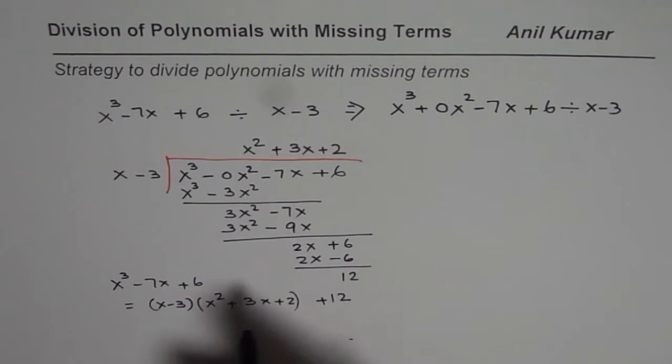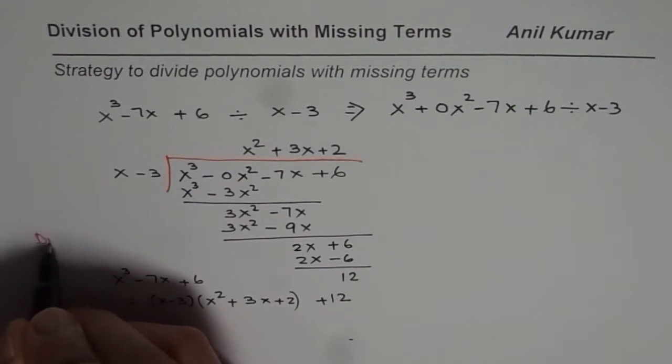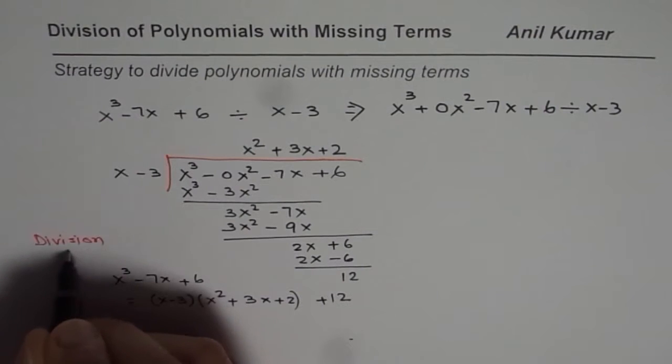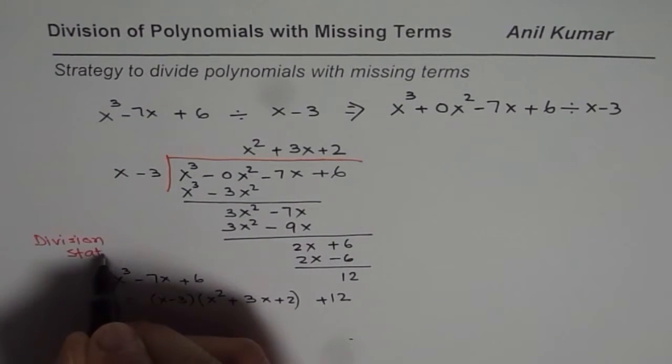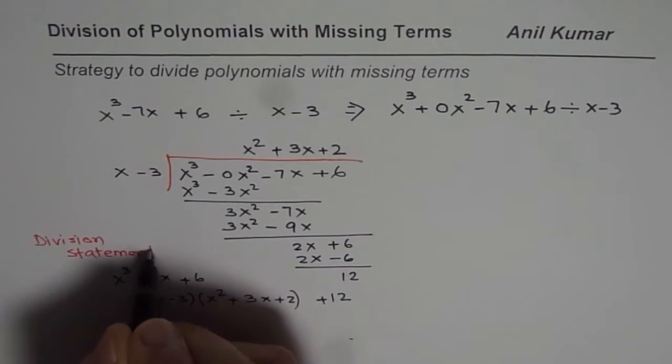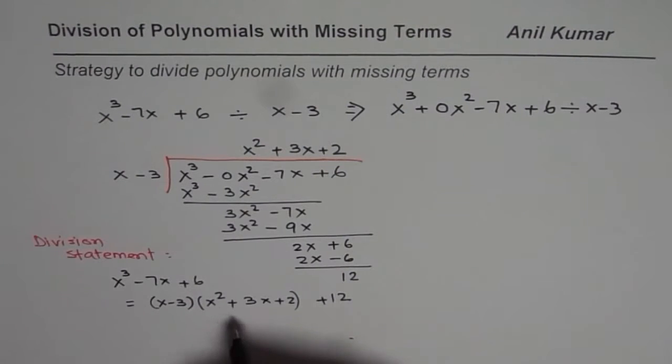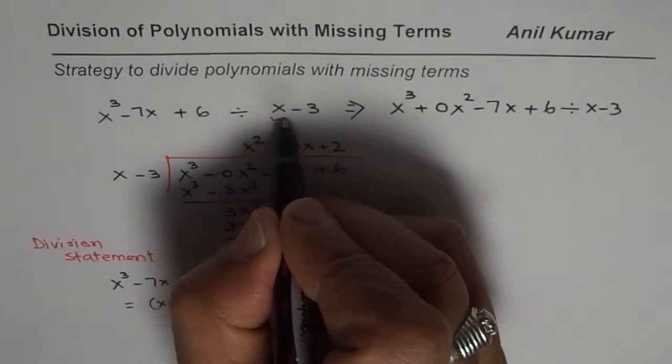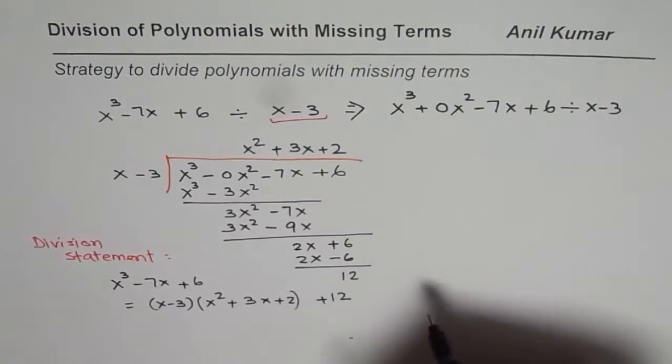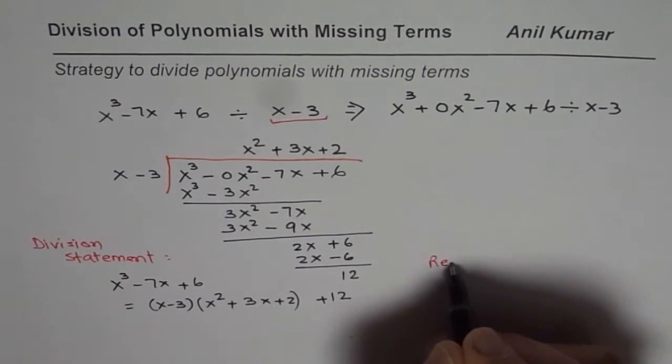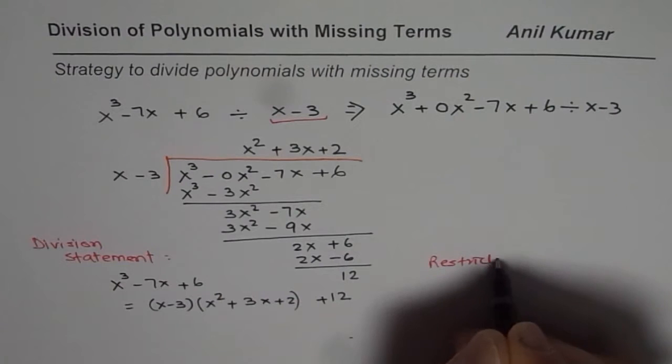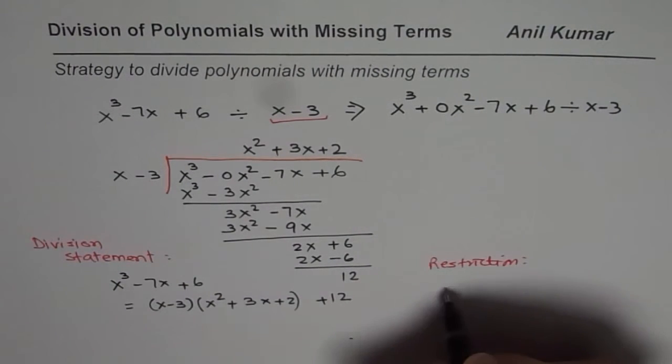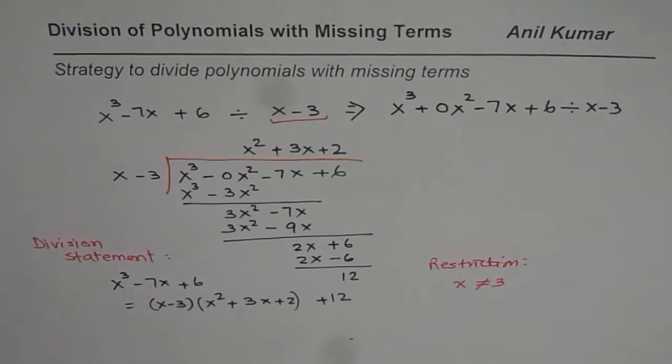Let me write here division statement for you. That is the division statement. And here you will notice, whenever you are dividing by a polynomial, that cannot be 0. So we may also write restrictions. Restriction here is that x is not equal to 3, because that will make it 0.